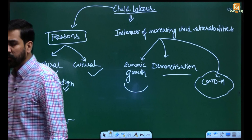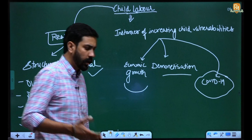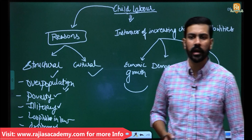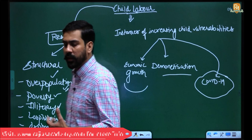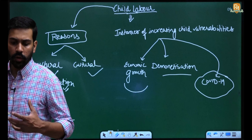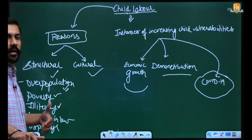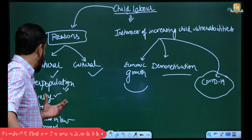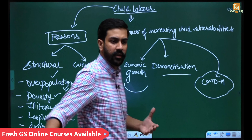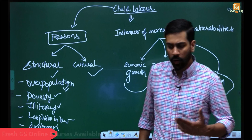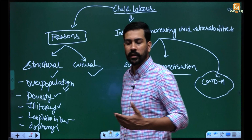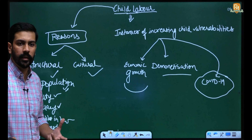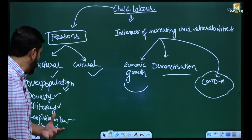Illiteracy: the population that is illiterate or ignorant regarding the long-term benefits of education does not know how education can be an agent of social change. Not knowing the long-term benefits of education also contributes to child labor.